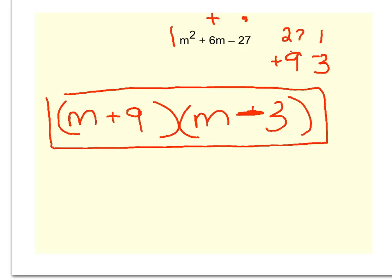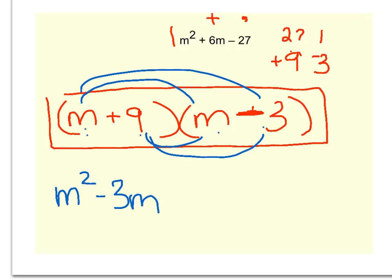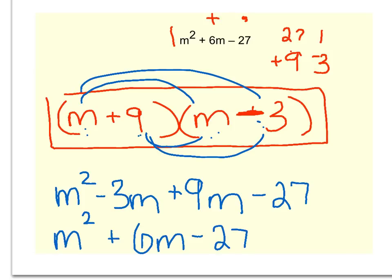This time I'm going to check just to make sure I did everything correct. So when I FOIL and combine like terms, I should get back to where I started. m times m is m squared. m times negative 3 is negative 3m. 9 times m is a plus 9m. And 9 times negative 3 is negative 27. So you end up with m squared plus 6m minus 27. Ask yourself, is that where we started? Sure enough, m squared plus 6m minus 27.